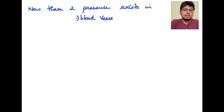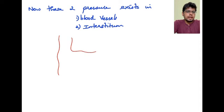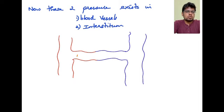These two pressures exist in two areas: one is in blood vessels, that is in capillaries, and second is the interstitium. These are indicated by the symbols pi_c (colloid oncotic pressure in the capillary), pi_i (colloid oncotic pressure in the interstitium), P_c (hydrostatic pressure in the capillary), and P_i (hydrostatic pressure in the interstitium).